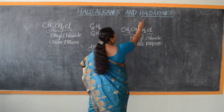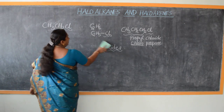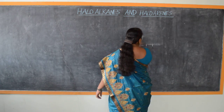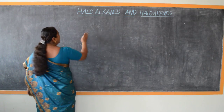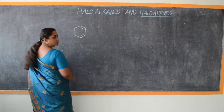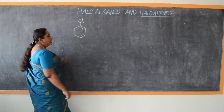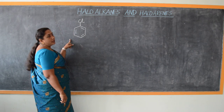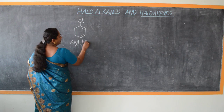Let us look at a few cases of haloarenes. As the name itself indicates, they are all aromatic hydrocarbons containing halogens in them. All aromatic hydrocarbons contain at least one benzene ring in their molecule, which is why they are called aromatic hydrocarbons. If a halogen is directly attached to the benzene ring, they are called haloarenes — the general IUPAC name. In trivial nomenclature, we call them aryl halides.